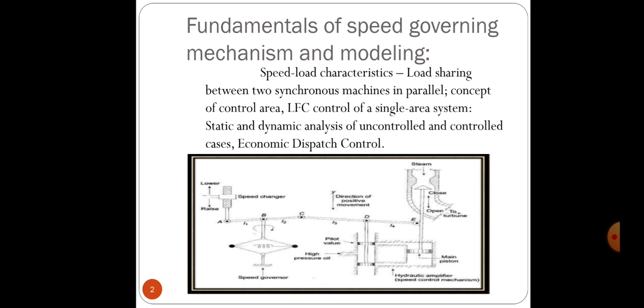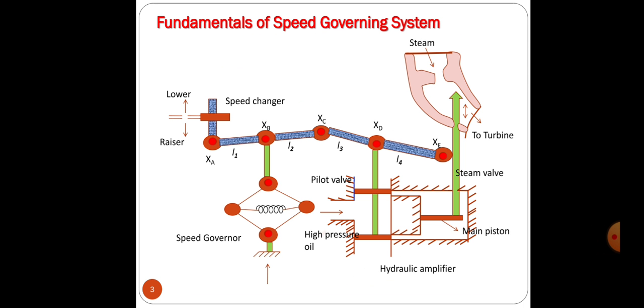A model of speed governing system assumes that the system is initially operating under steady conditions. The linkage mechanism is stationary and pilot valve closed, steam valve opened by a defined magnitude, turbine running at constant speed with turbine power output balancing the generator load.